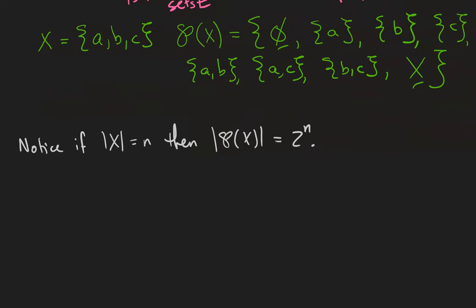Notice that if the cardinality of X is equal to n, then the cardinality of the power set is going to be equal to 2^n. Remember, cardinality is the number of elements in the set. So in the above example, we had that the cardinality of X was 3. So the cardinality of the power set was 1, 2, 3, 4, 5, 6, 7, 8, which is 2 to the third power.